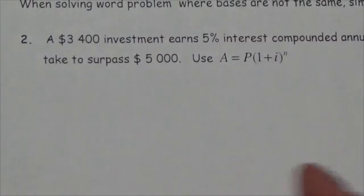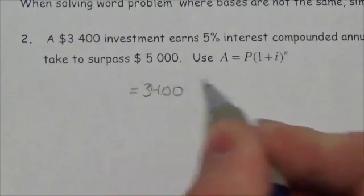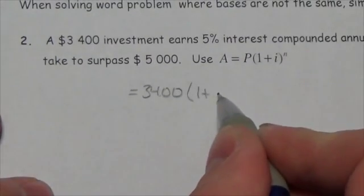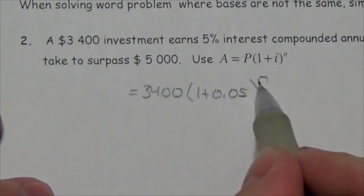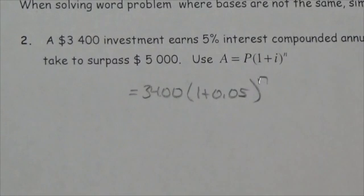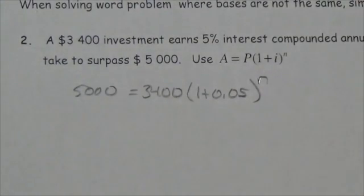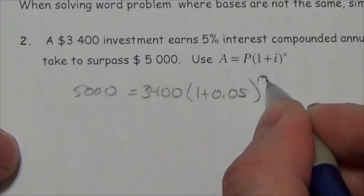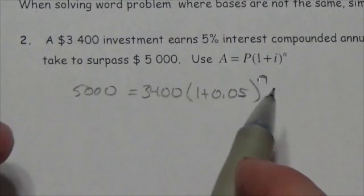A $3,400 investment earns 5% interest compounded annually. Determine the number of years it will take to surpass $5,000. We plug into the compound interest equation. $3,400 is our principal P. At 5% compounded annually, it's 1 plus 0.05 to the power n, where n corresponds to the number of years — since it's compounded once per year, the number of compounding periods equals the number of years. We want to know how long to reach $5,000. The variable is up in the exponent, which is where it needs to be to use logarithms.